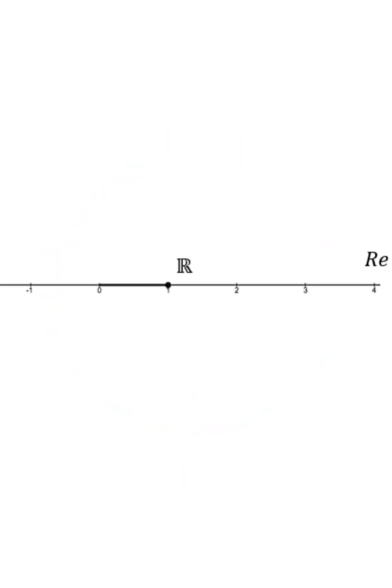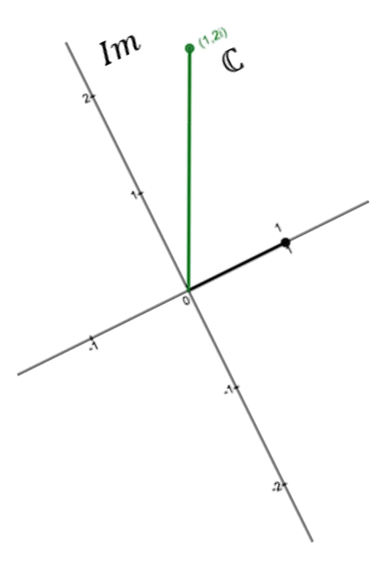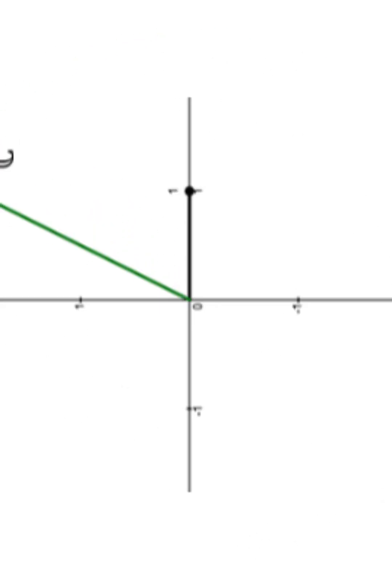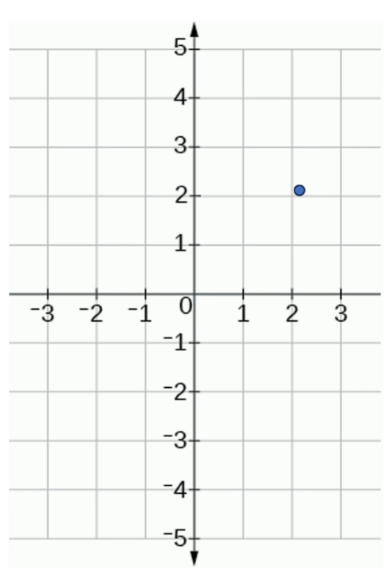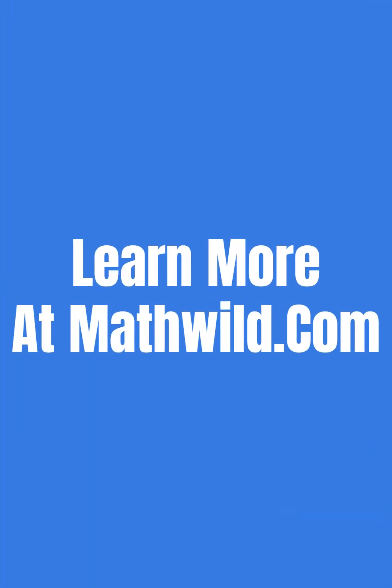With this representation, our number line becomes a plane, and i becomes a rotation of 90 degrees. But rotation is just a start. Complex numbers give us the tools to navigate our number system in an entirely new dimension.